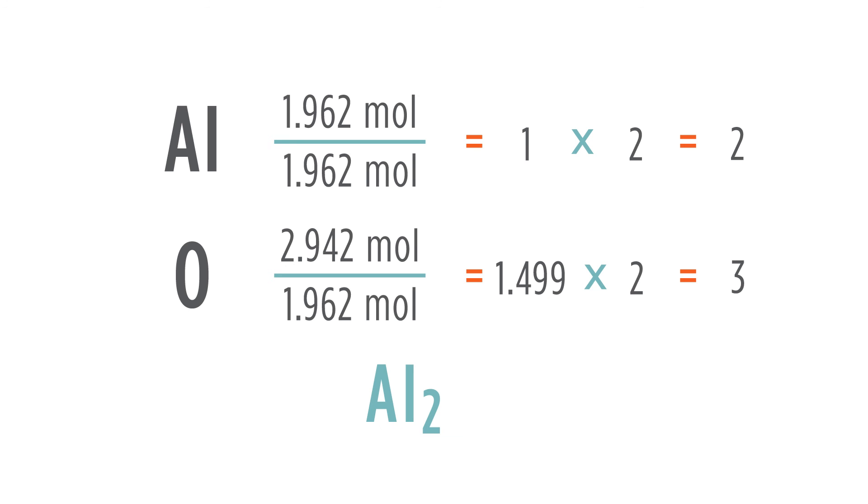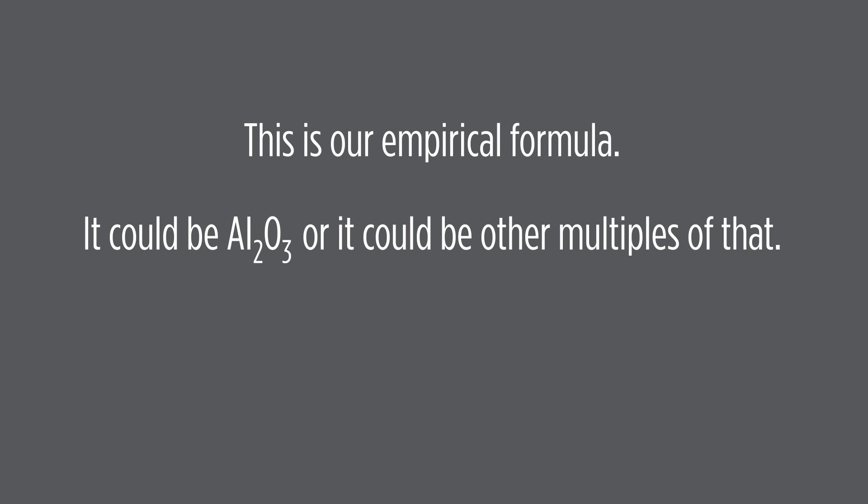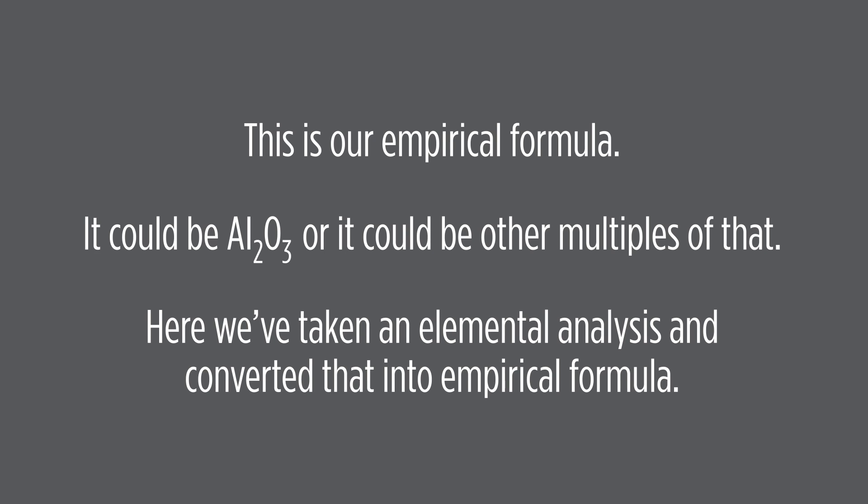Then we can have aluminum 2, oxygen 3. This is our empirical formula. Our molecular formula would be multiples of this. It could be Al2O3 or it could be other multiples of that. Here we've taken an elemental analysis and converted that into an empirical formula.